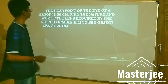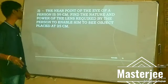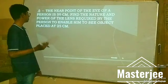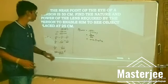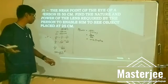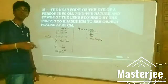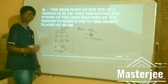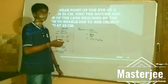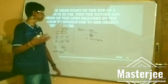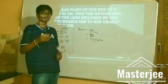Final question: The near point of the eye of a person is 50 cm. Find the nature and power of the lens required to enable the person to see objects placed at 25 cm. From the given values, v equals minus 50 and u equals minus 25. By using the lens formula 1/f = 1/v − 1/u, we get f equals 50 cm. The power P = 100/f in centimeters = 100/50 = plus 2 D.